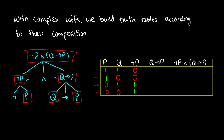Now we have not p finished, so let's do q arrow p. Remember, q arrow p is false only if q is true and p is false — otherwise it's going to be true. In the first row we have 1 arrow 1, so that's true. In the second row, q is false and p is true — 0 arrow 1 — also true, because whenever the antecedent is false the conditional is true. In the third row we have 1 arrow 0, which is the only case where the conditional is false. And in the fourth row, 0 arrow 0, this is true. So for q arrow p our column is 1, 1, 0, 1.